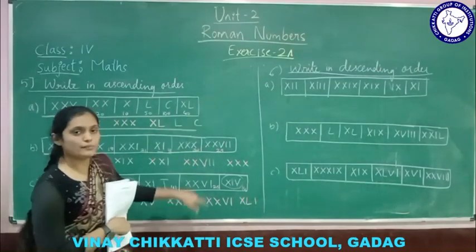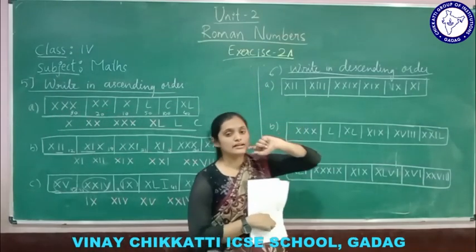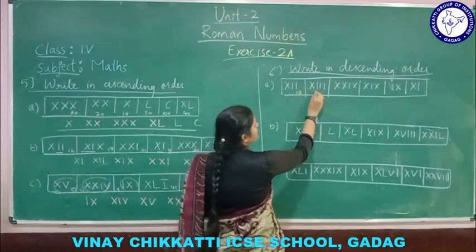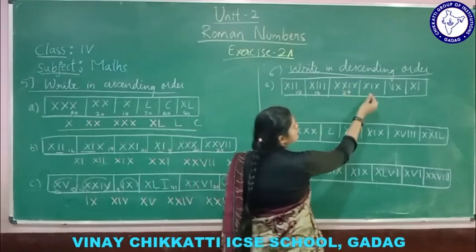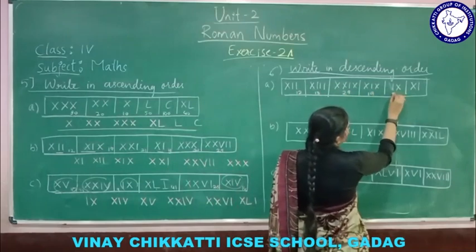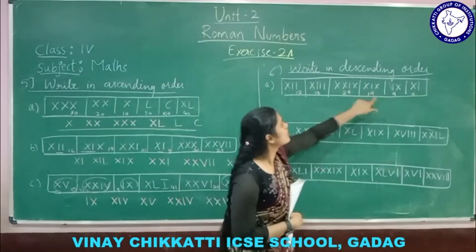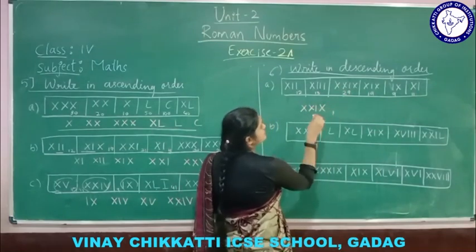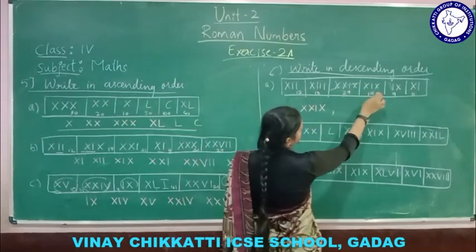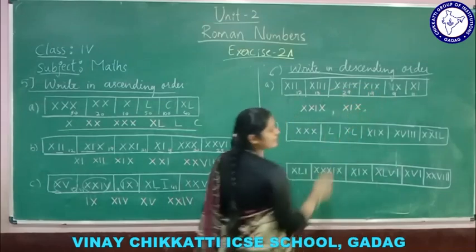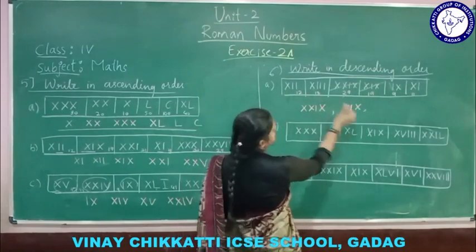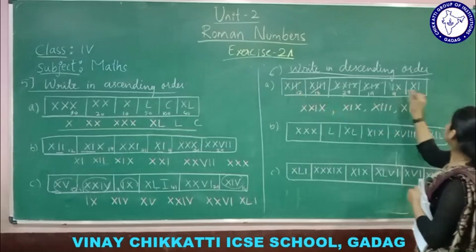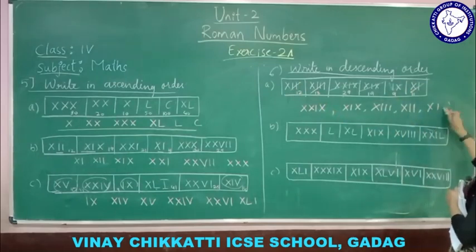Now arrange in descending order — from larger to smaller. The numbers given are: 12, 13, 29, 19, 9, and 11. Compare and find the largest: 29 is the largest, write it first. Then 19, then 13, then 12, then 11, and finally 9.